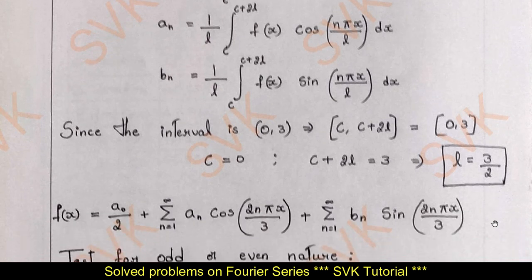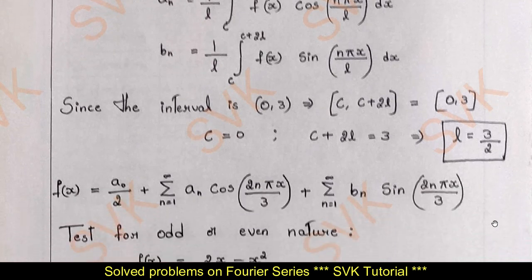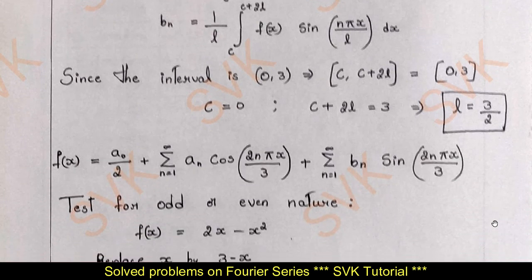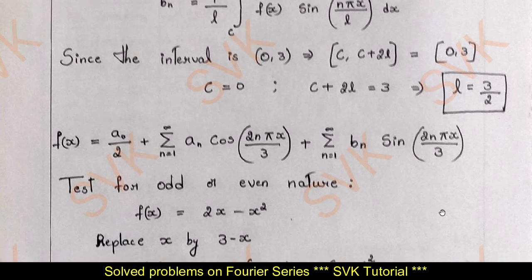Substituting l = 3/2 into the Fourier series formula, we get f(x) = a₀/2 + Σ aₙ cos(nπx/3) + Σ bₙ sin(2nπx/3).